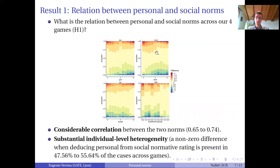What you can see here are the four different games and each action within them. We show the difference between the personal and the social norm rating, which is zero if it takes a yellowish color, and is either negative or positive if it takes red or green-bluish colors.